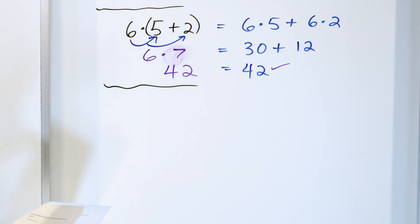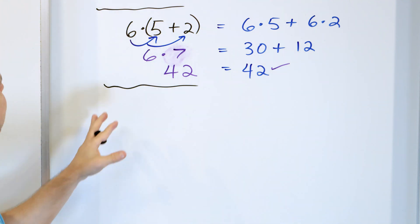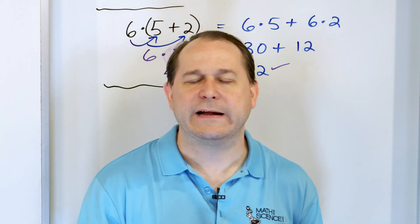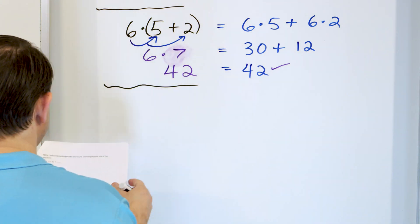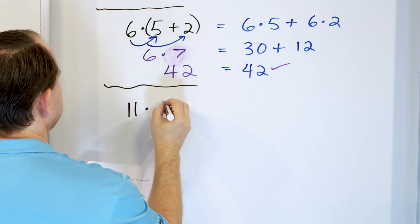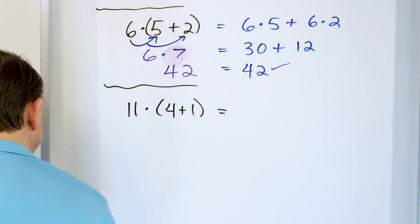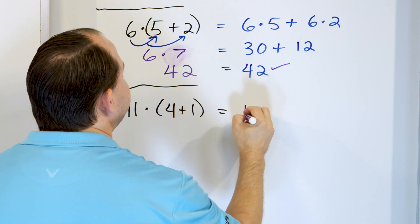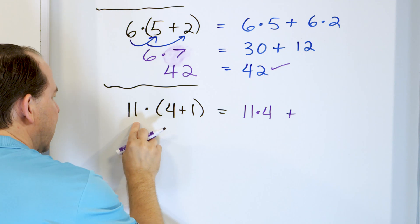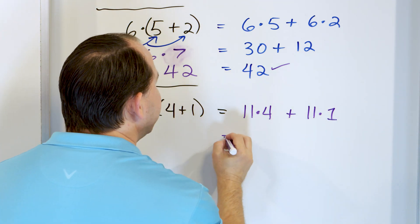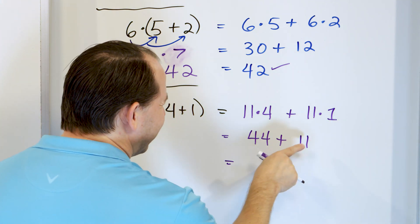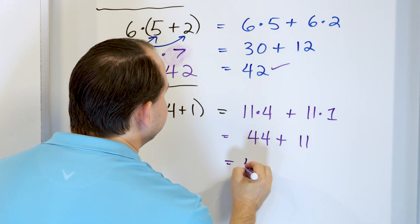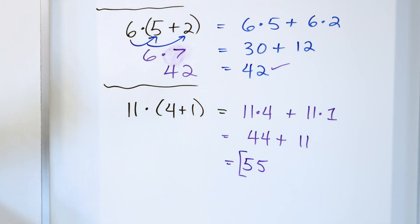We're halfway done. I've shown you that the left-hand side always equals the right-hand side, so now we're going to stop checking every time and just use the distributive property to calculate the answer. Let's say we have 11 times (4 plus 1). I get 11 times 4, plus 11 times 1. 11 times 4 is 44, and 11 times 1 is 11, giving us 55. If you check it mentally: 4 plus 1 is 5, and 5 times 11 is 55. Correct.